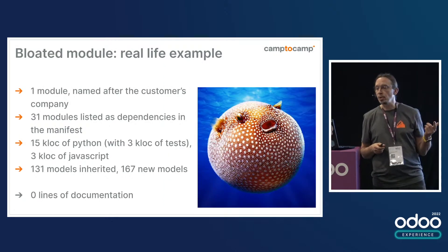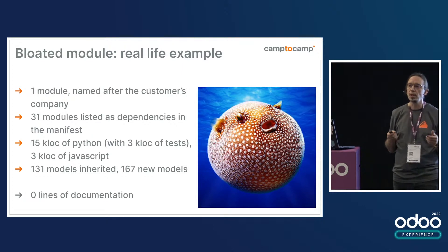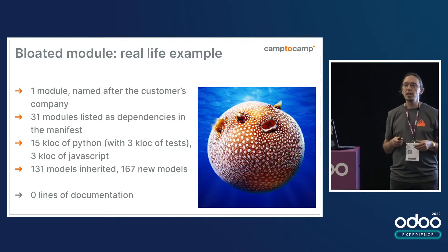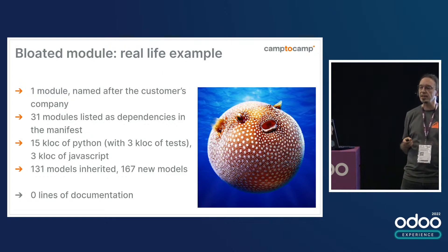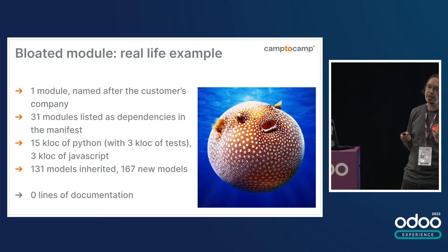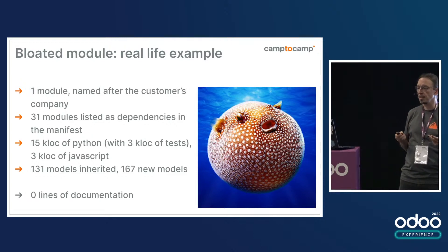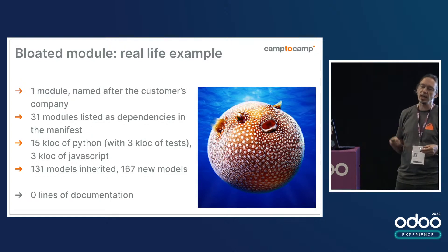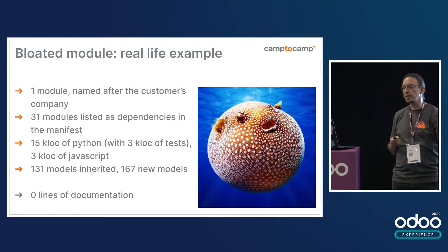A real-life example of a bloated module is something I got from another partner who had integrated Odoo for their customer, and the customer switched to Camp2Camp. We received one module named after the customer's company name — not really informative. Inside, there were 31 modules listed as dependencies in the manifest, 15,000 lines of Python code plus 3,000 lines of Python test code and 3,000 lines of JavaScript code, with a total of 131 models inherited and 167 new models defined. And of course, zero lines of documentation.